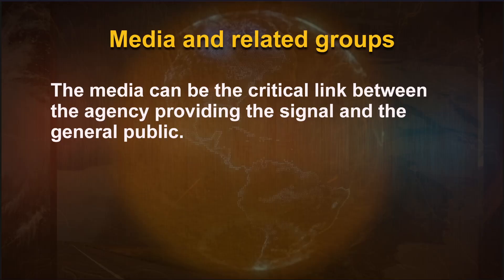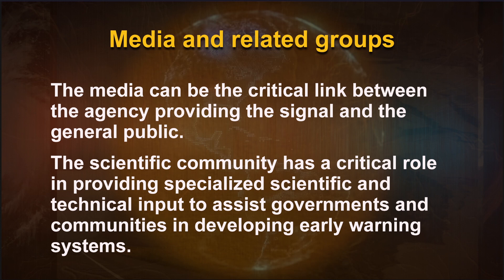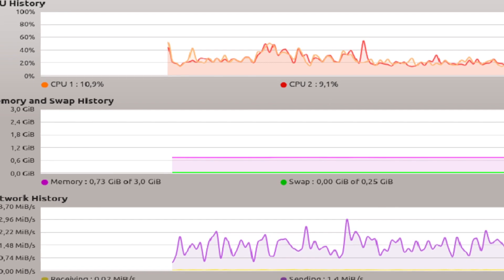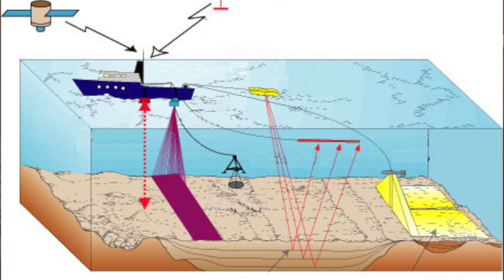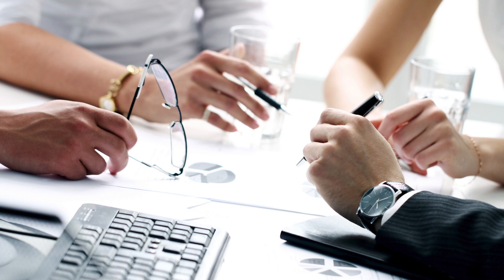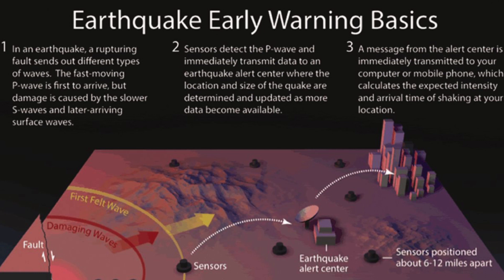The media play an essential role in improving disaster consciousness of the general population and in disseminating early warnings, serving as the critical link between the warning agency and the general public. The scientific community provides specialized scientific and technical input to assist governments and communities in developing early warning systems, analyzing risks from natural hazards, supporting monitoring and warning service design, fostering data exchange, and translating scientific information into understandable warnings for those at risk.